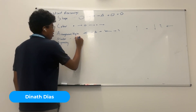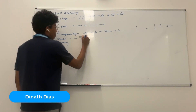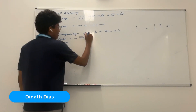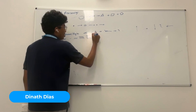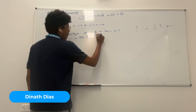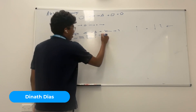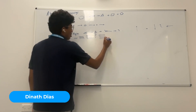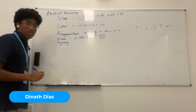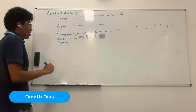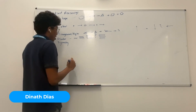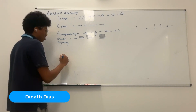Then we have number. For example: one line, then two lines, then three lines, then four lines — the next one will of course be five lines. That's a number pattern.